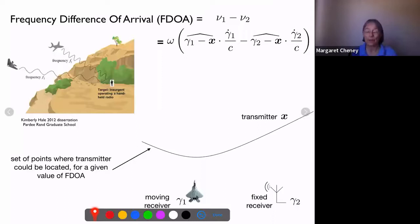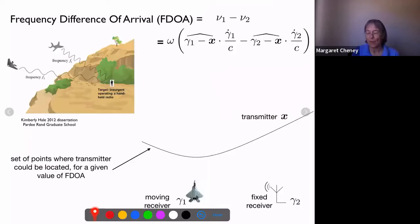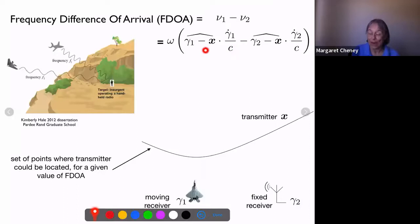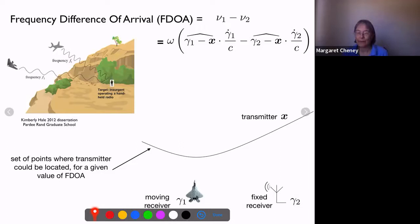In the simple case where one source is fixed, things simplify. The set of points x for which that quantity is constant is the set where the dot product of the sensor velocity and the direction to the source point is constant. That's a cone, and the cone intersects a flat plane in a hyperbola. So again we get a hyperbola giving the set of points where the FDOA is constant.